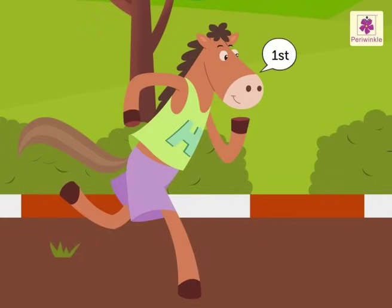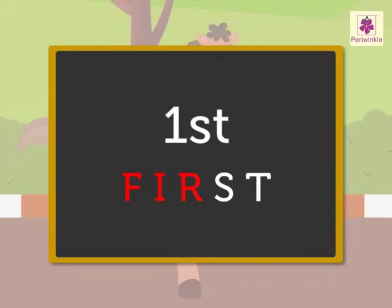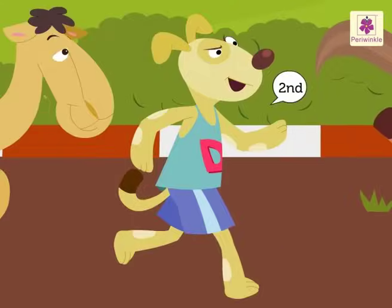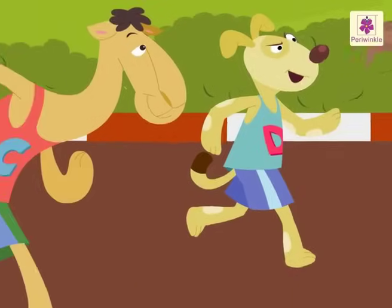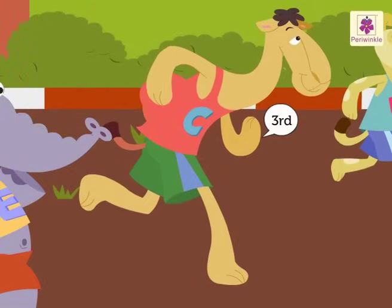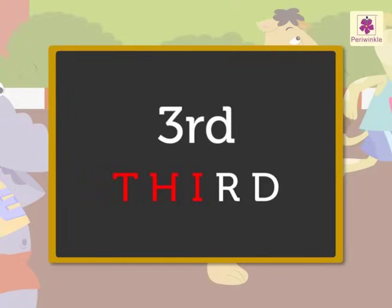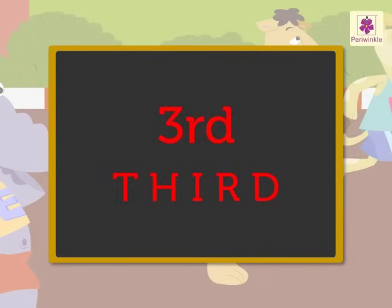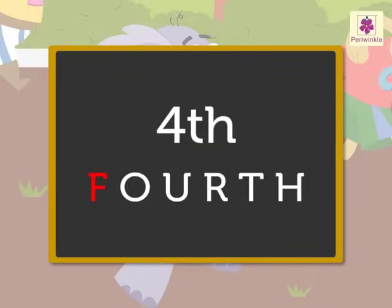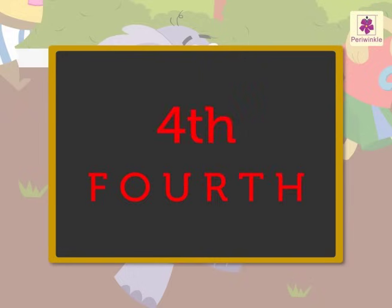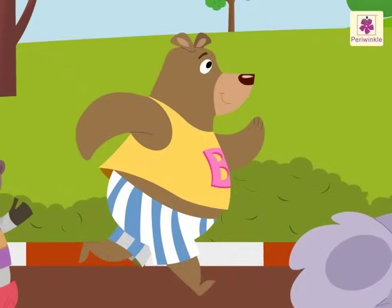Now let us look at the winning positions of these animals. The horse came first — F-I-R-S-T, first. The dog came second — S-E-C-O-N-D, second. The camel is at the third position — T-H-I-R-D, third. The elephant is at the fourth position — F-O-U-R-T-H, fourth.